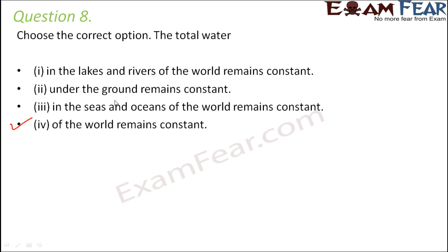Similarly, water in lakes, rivers, and oceans does not remain constant at specific locations. But the total water of the world remains constant. You might ask why we are so concerned about wasting water then. Of all the water available, only a tiny fraction — like a tablespoon from a 20-litre bucket — is usable. When we waste water, some becomes unusable, so we want more water to remain in a usable form for all living organisms.